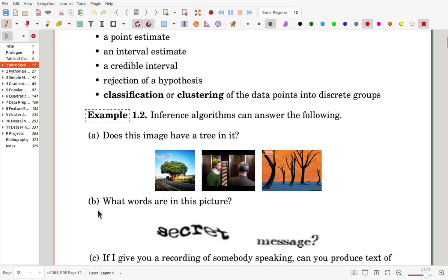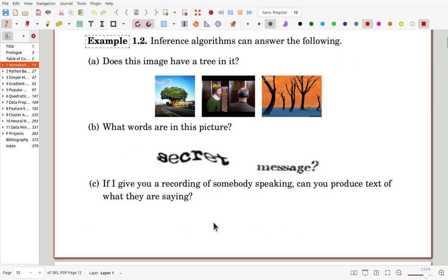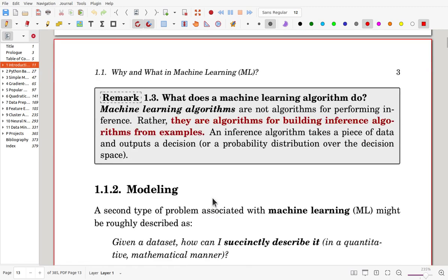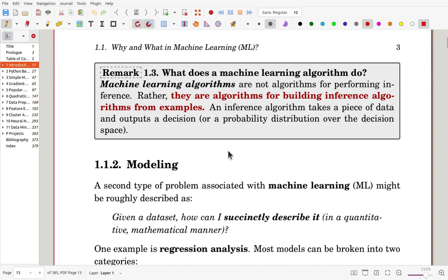it can answer what words are in this picture. So, the algorithm can say what they are. Also, some recording of somebody speaking, then the inference algorithms can produce text of the speaking. Through machine learning, you will make such algorithms.